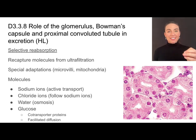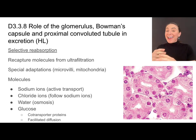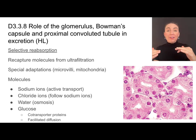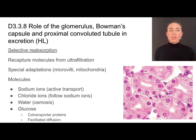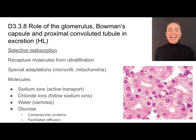Since ultrafiltration is not selective, there are going to be some molecules that get pushed out that actually need to be kept in the blood. So they need to be returned from the filtrate and absorbed back into the bloodstream — that is called selective reabsorption. It happens in the proximal convoluted tubule. Here I have some cross sections of many proximal convoluted tubules — remember there are a million nephrons in each kidney — and we can see that the cells lining this proximal convoluted tubule are there to facilitate selective reabsorption.